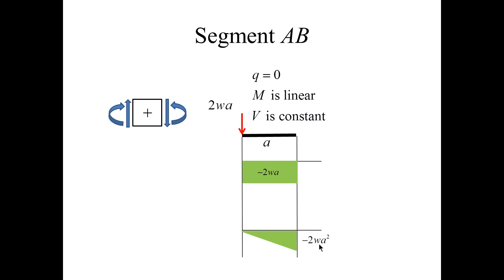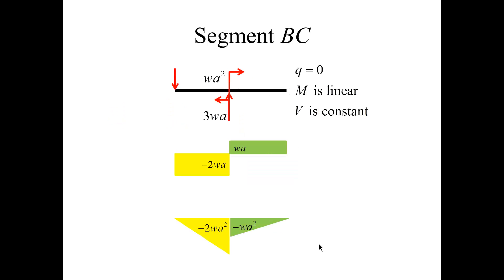Next, I proceed to the segment BC. So I inherit these diagrams from the previous segment. Now, if I go through this point, I observe that the force 3Wa up will produce a jump equal to 3Wa, so that the shear force diagram arrives at Wa.